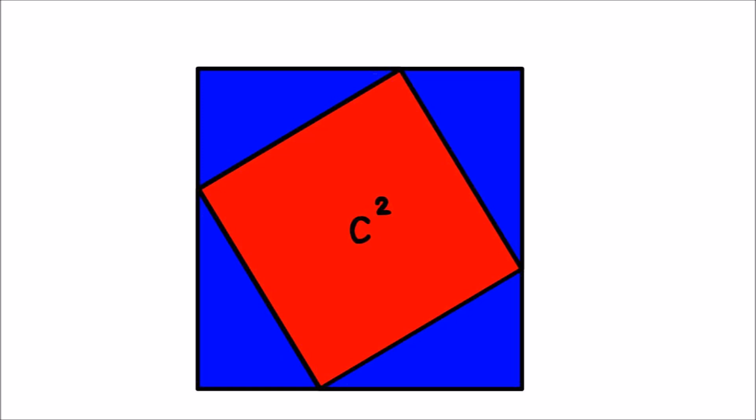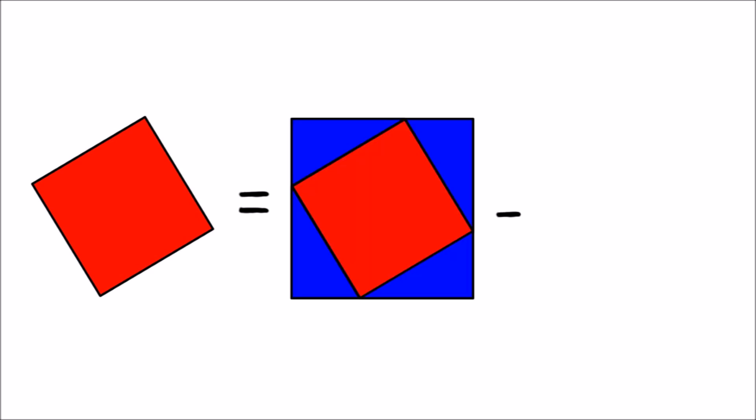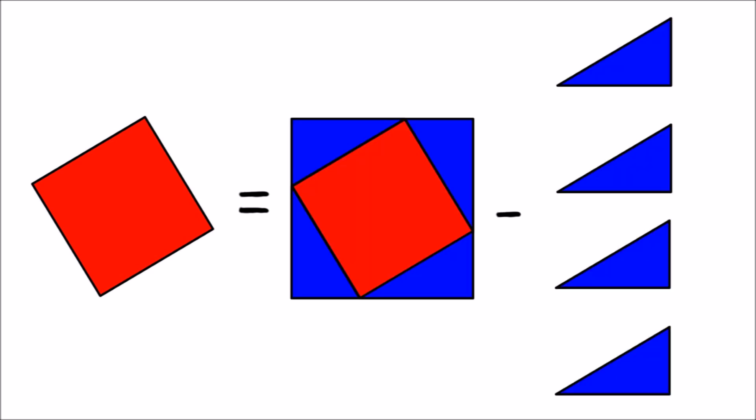This picture gives us another way of describing the smaller square, though. We can think of it as a piece of the larger square, a piece that you get by cutting off the four triangles. So the area of the small square must be equal to the area of the big square minus the total area of the triangles.